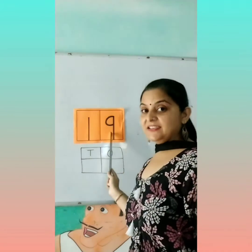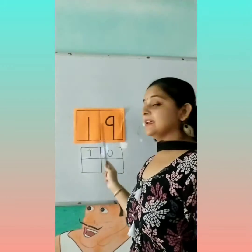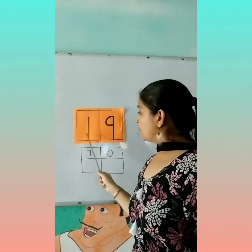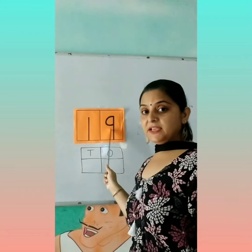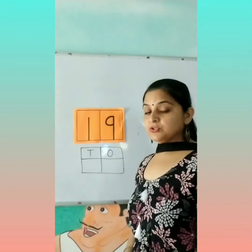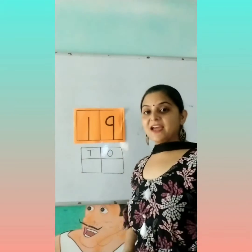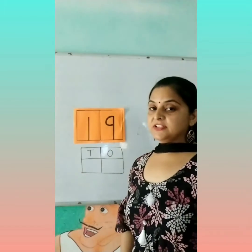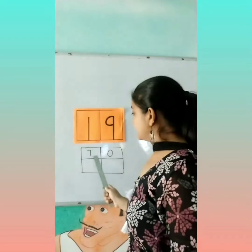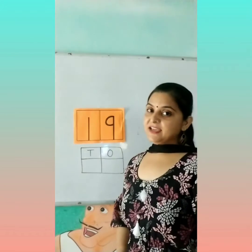1, 9, 19. 1, 9, 19. So children, 1 and 9 makes the number 19. Now you say with me: 1, 9, 19. Now children, let's understand the concept of 10's place and 1's place of number 19.